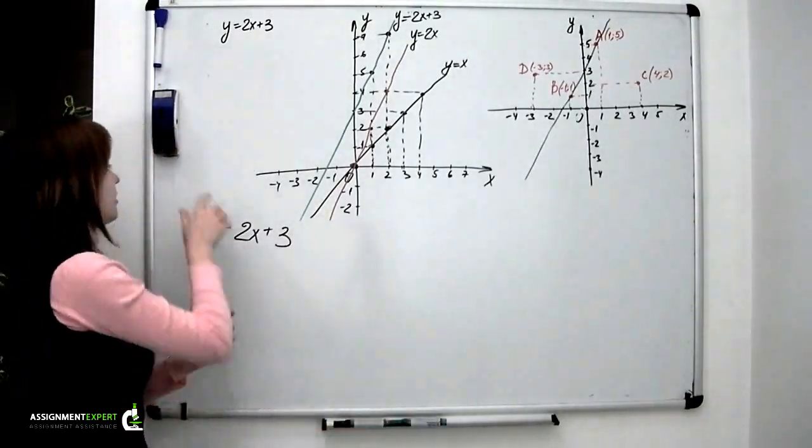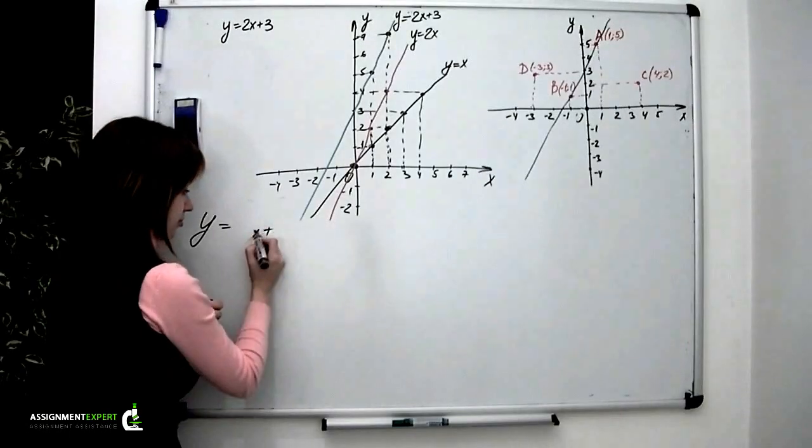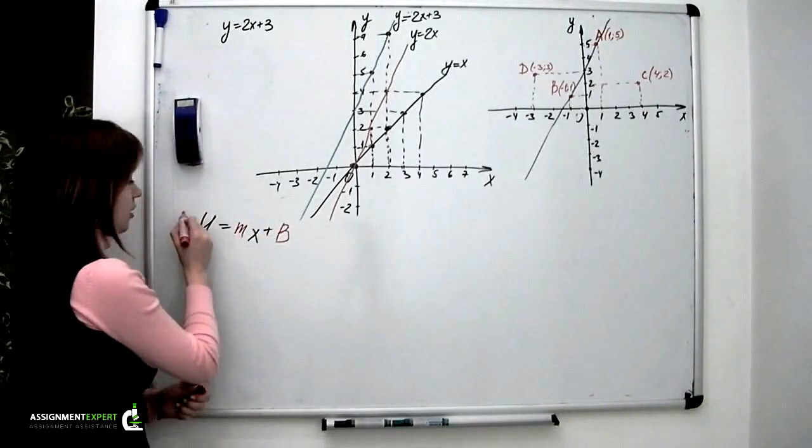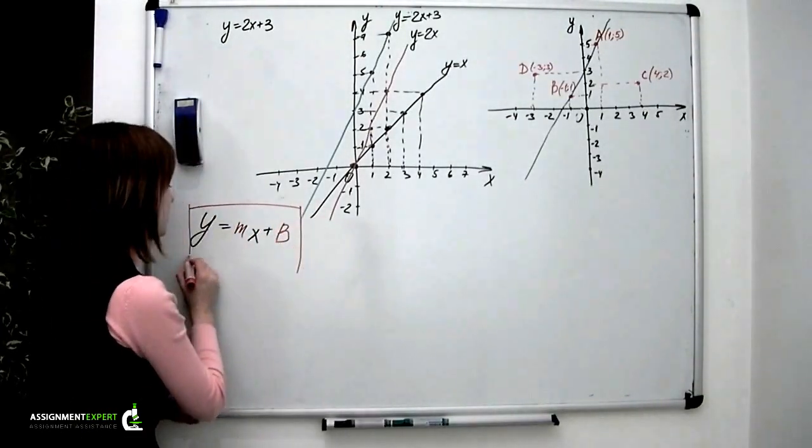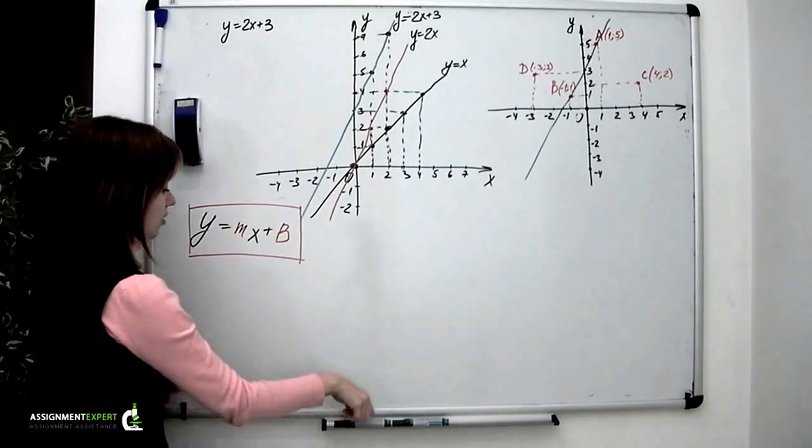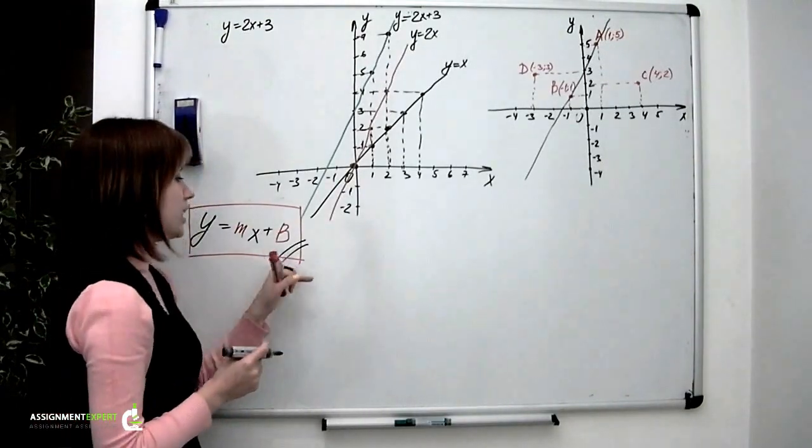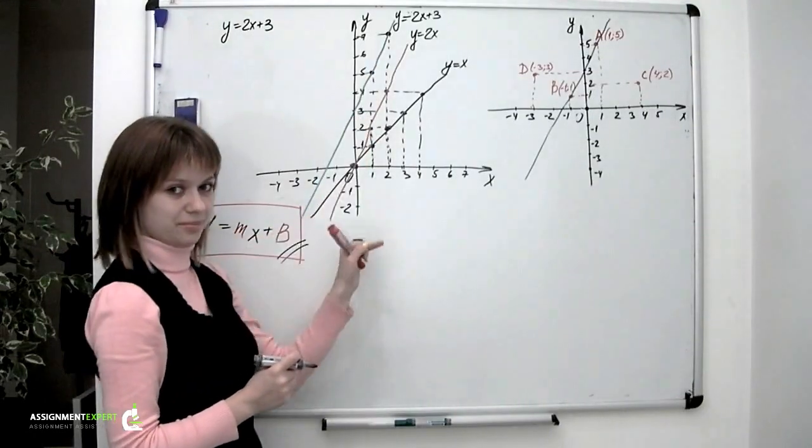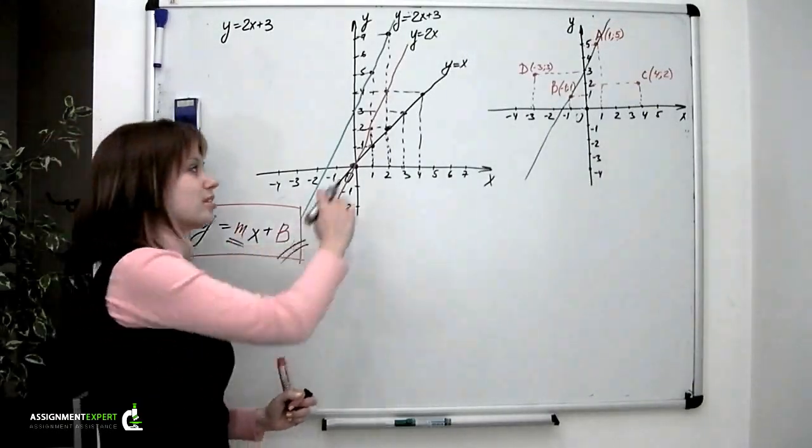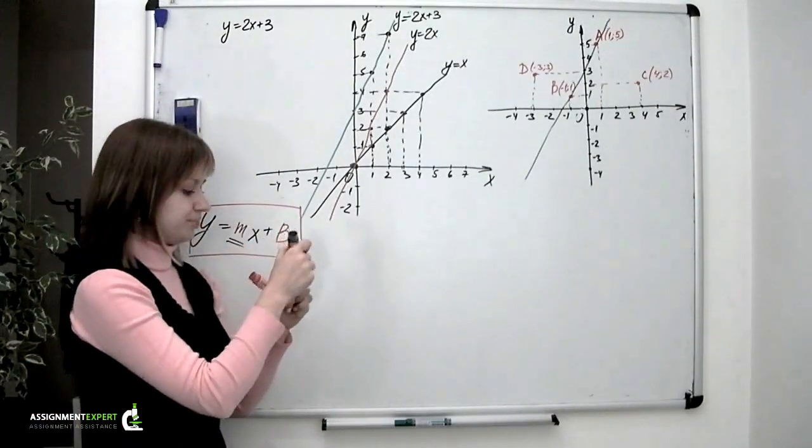Now, if we replace the numbers in this last example by parameters m and b, we will obtain the equation of a straight line written in general form, which is called the slope-intercept form. Right here, b is called the y-intercept - b is the point where the line crosses the y-axis. And then there is m, which is called the slope. Slope defines the angle between the line and the x-axis, or in other words, it defines the steepness of the line.